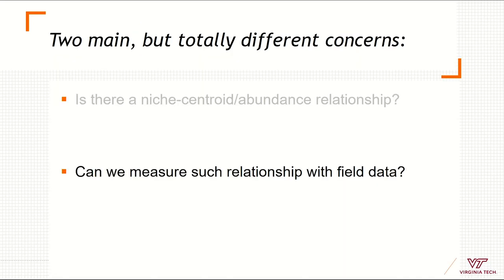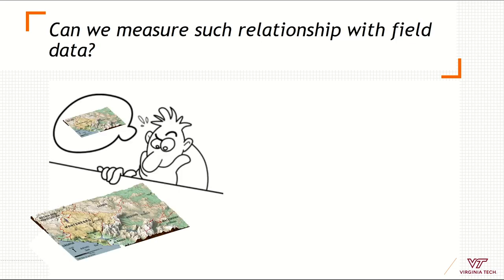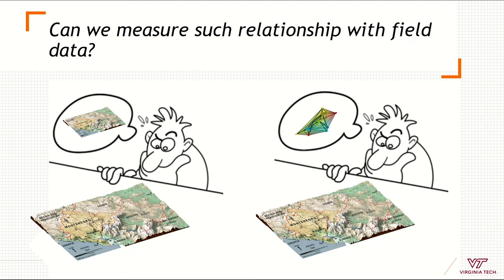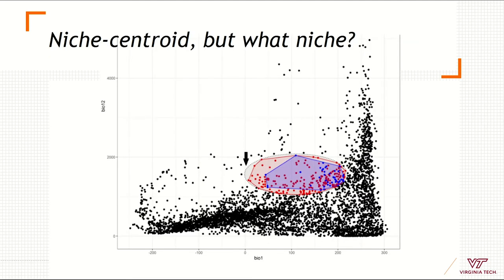For the second question — whether we can reconstruct that relationship using field data — one of the challenges is that we collect and generate data in geographic space and then need to analyze and interpret it in environmental space. A major challenge we found in the literature is that it's hard to define which niche we are studying. Most of the literature we found in disagreement or agreement with the niche centroid using field data failed to describe clearly what niche the researchers are exploring.